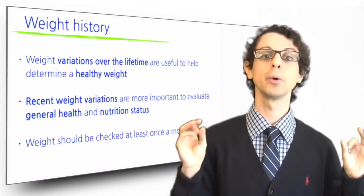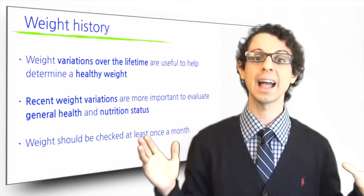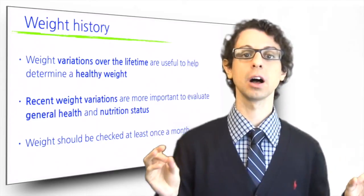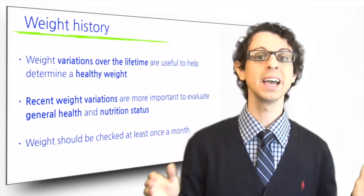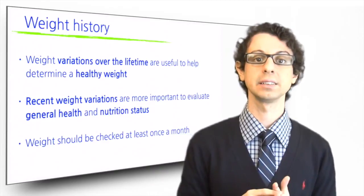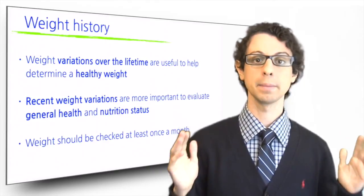Recent weight variations are more important to evaluate general health and nutrition status. In particular, an unintentional loss of over five kilograms over the last month indicates either severe malnutrition or underlying disease and requires immediate medical attention.